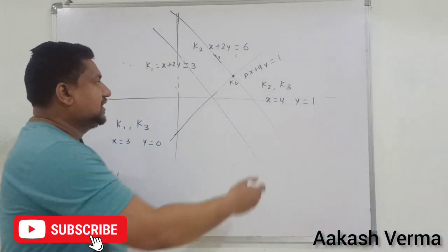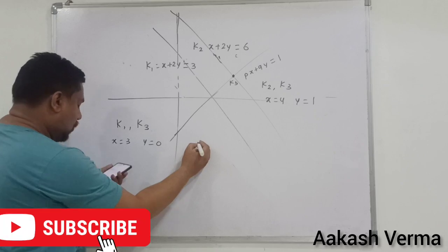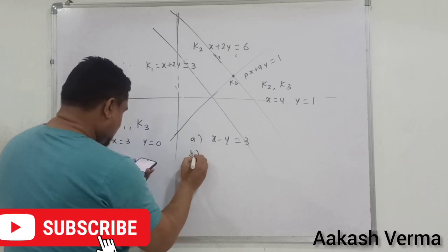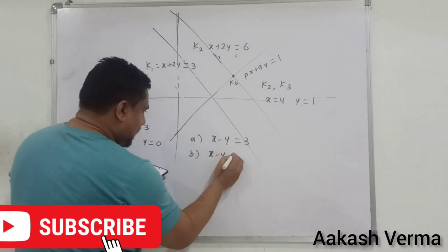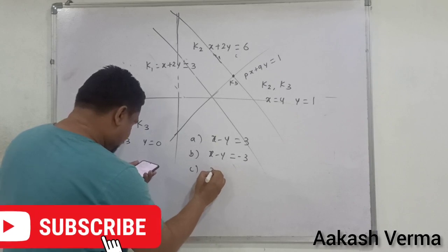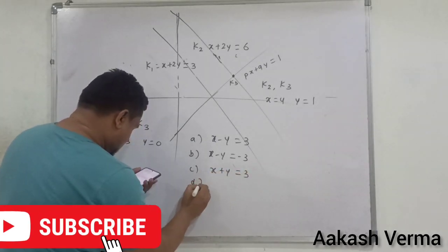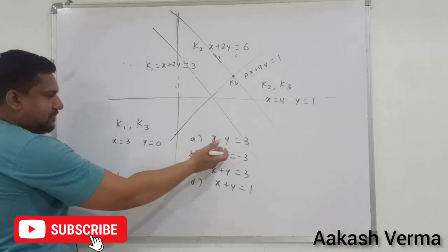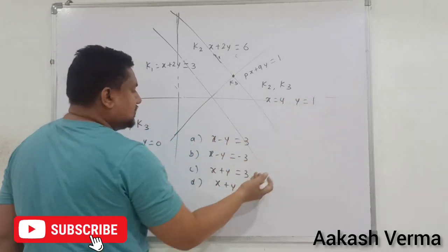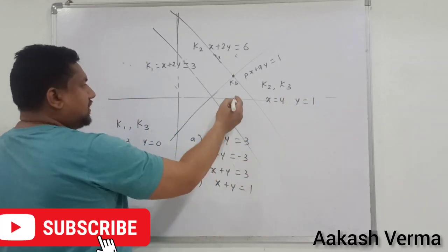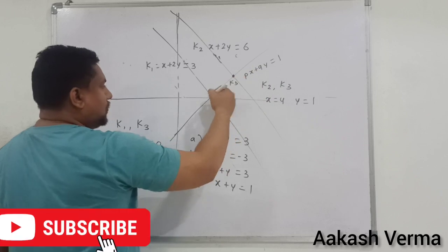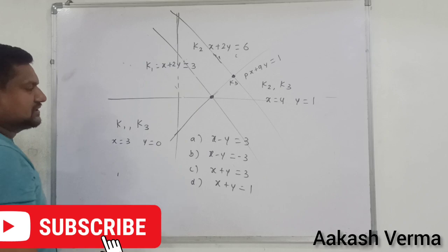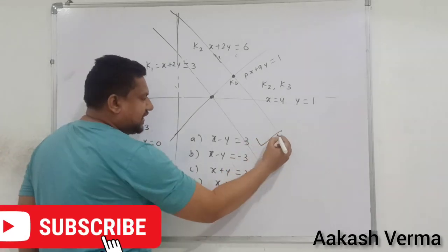आपको बताना है कि k3 की equation क्या होगी। Options हैं: A) x minus y equal to 3, B) x minus y equal to minus 3, C) x plus y equal to 3, D) x plus y equal to 1. तो यहाँ पर देखें, 3 minus 0 equal to 3 मिल रहा है, और 4 minus 1 भी 3 मिल रहा है। k3 की equation दोनों points से satisfy होनी चाहिए, तो first option correct है।